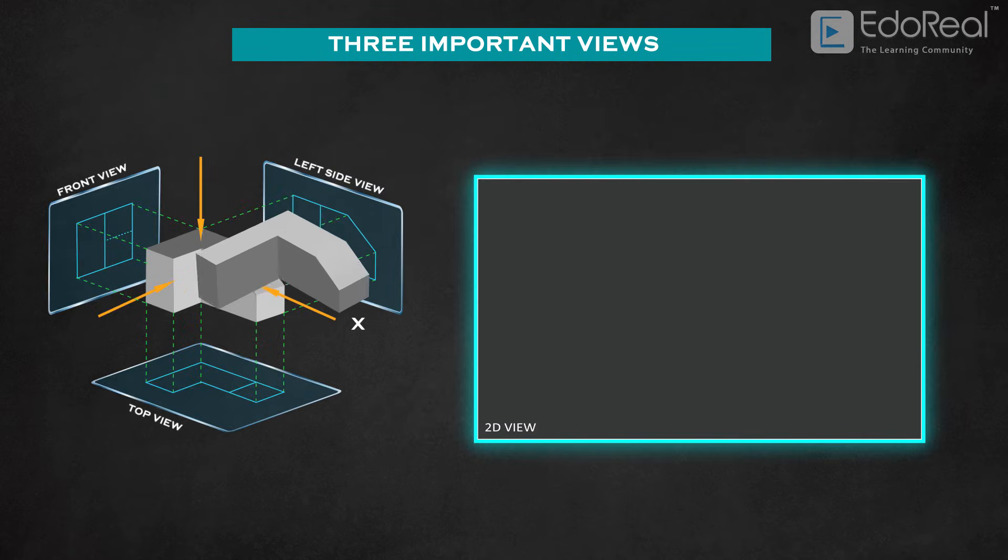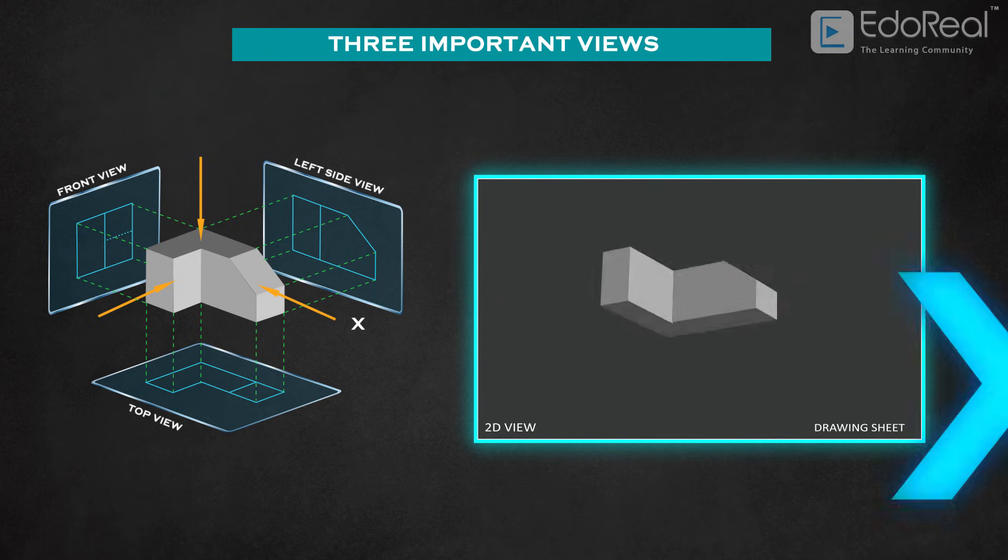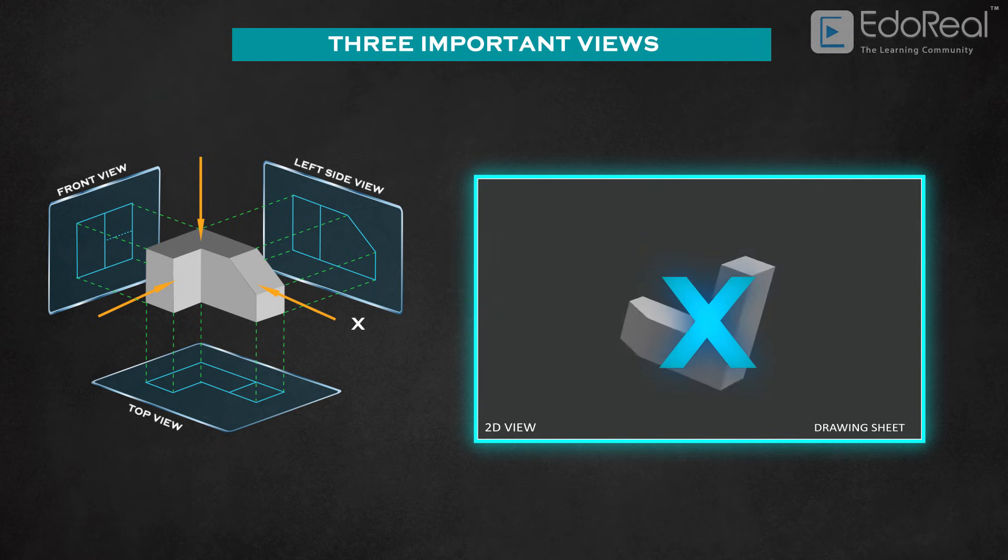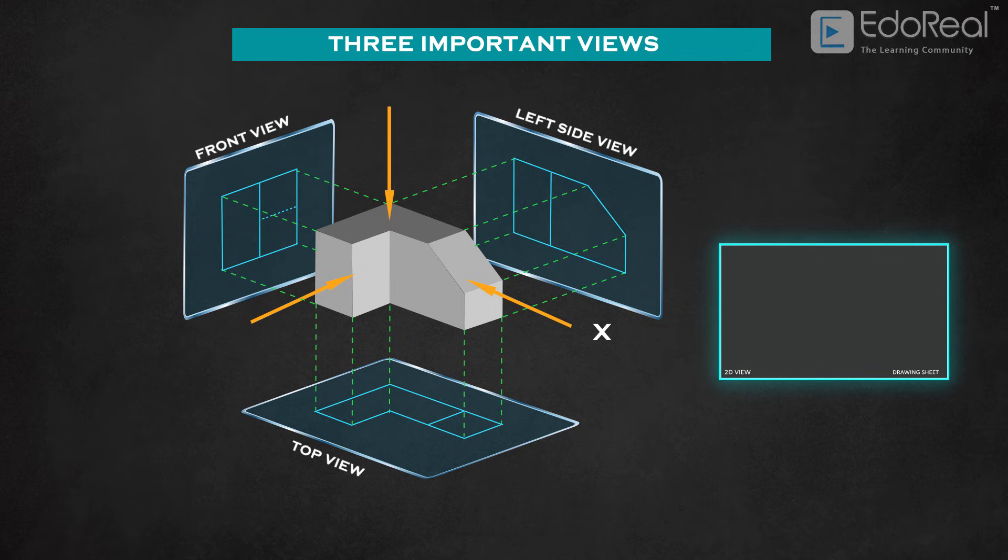We take these three views because we cannot draw three-dimensional complex objects on paper. So we convert it into two-dimensional shapes and draw them on paper.